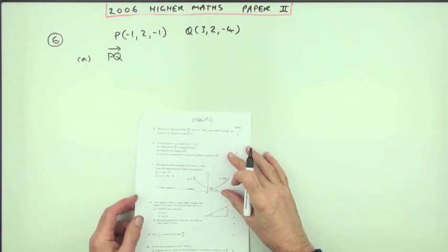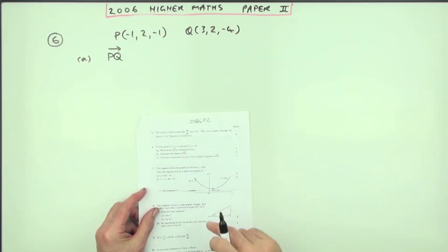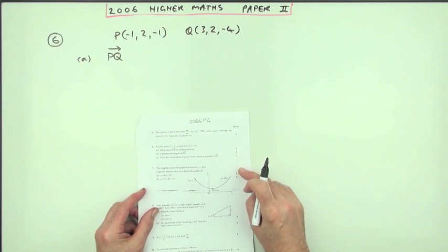Number 6 from the 2006 Higher Maths Paper 2, a very quick little vectors question for three marks.